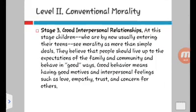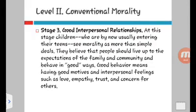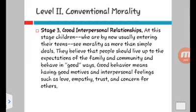The second level is called conventional morality, and inside it are two stages: stage three and four. In stage three, it's called good interpersonal relationships, so the morality is getting higher. At this stage, children who are usually entering their teens see morality as more than simple deals. They believe that people should live up to the expectations of the family and community and behave in good ways. Good behavior means having good motives and interpersonal feelings such as love, empathy, trust, and concern for other people.